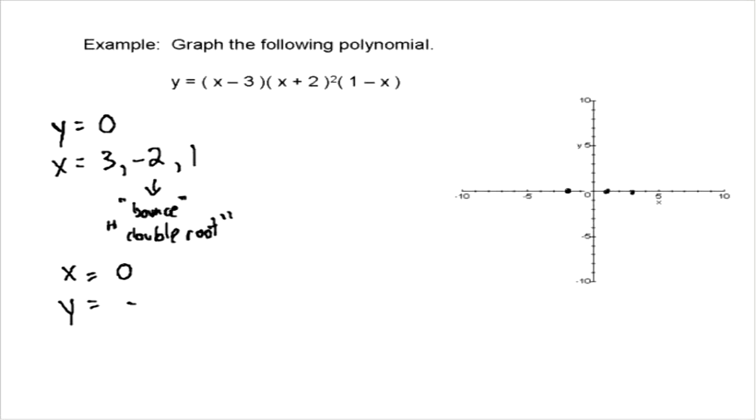So we want to figure out what is y equal when x equals 0. If we put x equals 0 in there, the first bracket is going to become negative 3. The second bracket is going to become 2, and that's still going to be squared. And the third bracket is going to become just 1. So we're going to be at negative 3 times 4, which is 12, times 1 is 12.